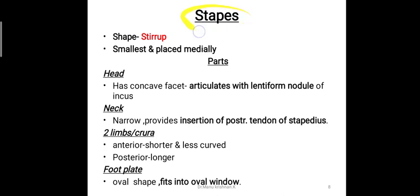The third bone is the stapes, which is the smallest of them all. It has the shape of a stirrup, is placed most medially among the three ear ossicles, and has four parts. The first is the head of the stapes, which has a concave facet that articulates with the lentiform nodule of the incus.